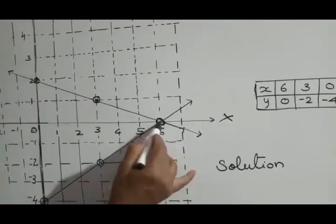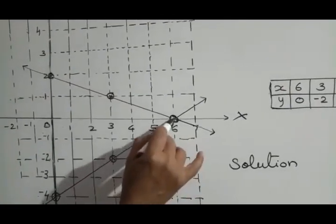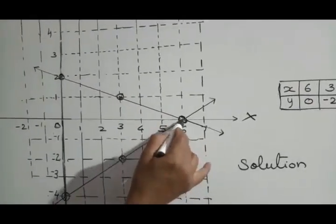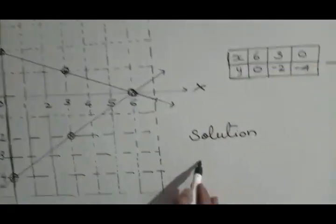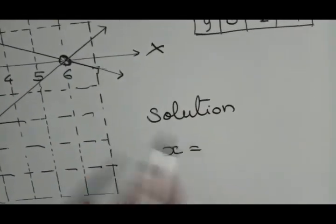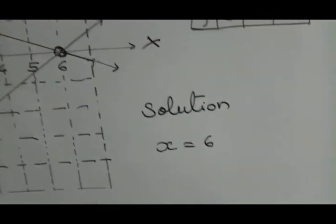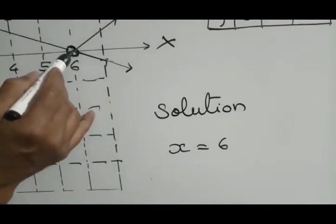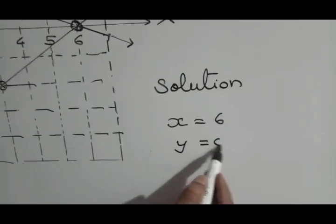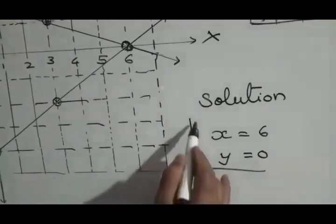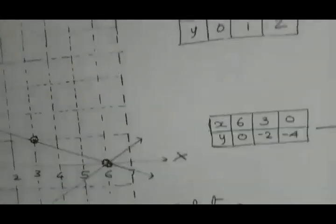Both the lines are now intersecting. The coordinates of this point of intersection — the x-coordinate and y-coordinate — give the solution. By observing, the x-coordinate is 6 and since the point lies on the x-axis, its y-coordinate is 0. So (6, 0) is the solution of the pair of linear equations in two variables.